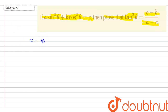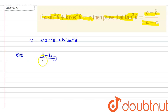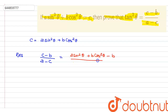Since c = a·sin²θ + b·cos²θ, we substitute into the right-hand side expression (c − b) / (a − c). This gives us (a·sin²θ + b·cos²θ − b) in the numerator, and (a − a·sin²θ − b·cos²θ) in the denominator.